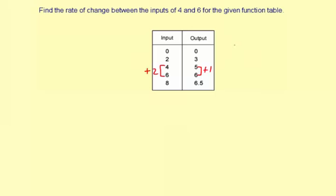So finding the rate of change, that's the change in the outputs, divided by the change in the inputs.